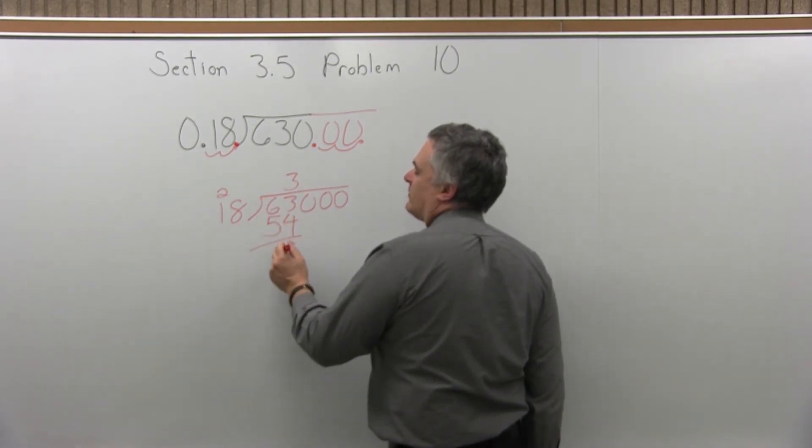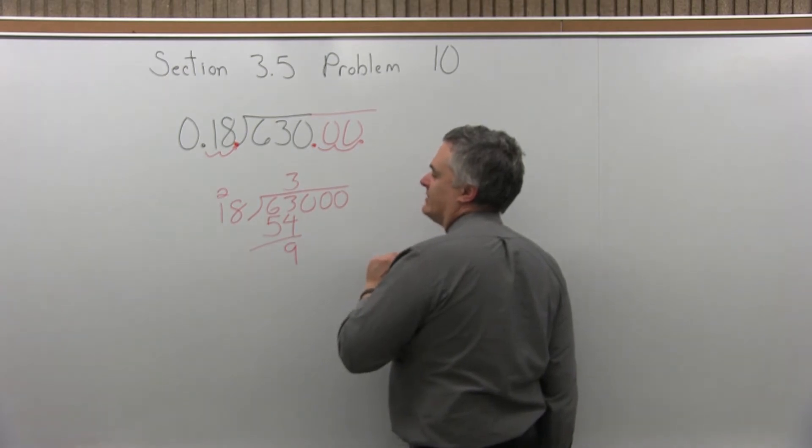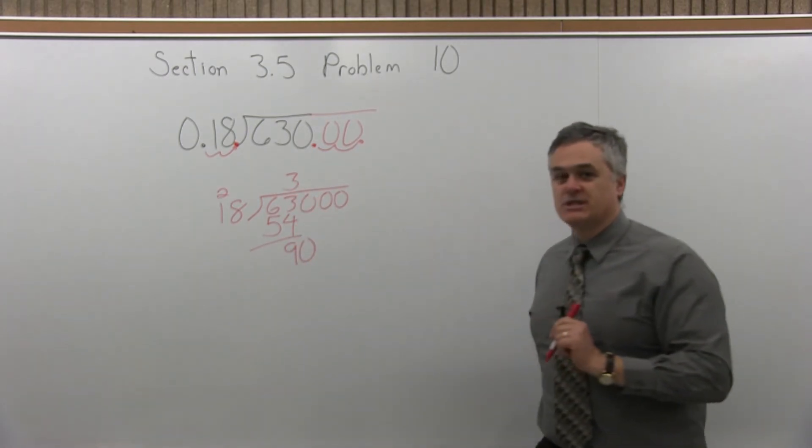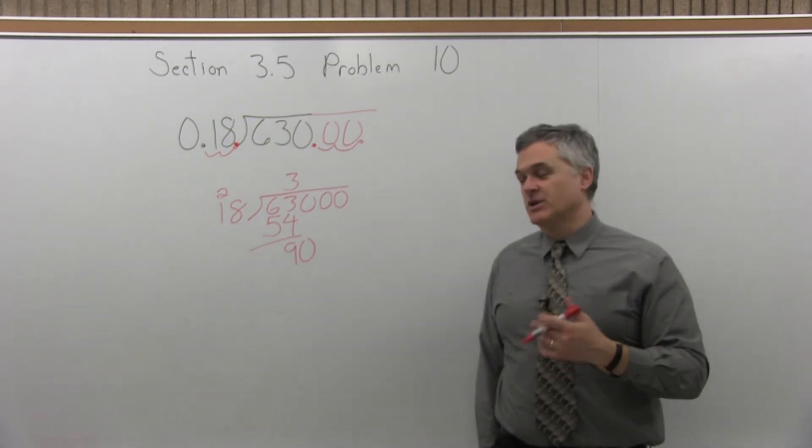Now, 63 minus 54 is 9. Bring down the next digit to the right, which is a 0. Put it next to the 9 that you got, it becomes a 90.